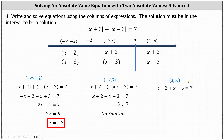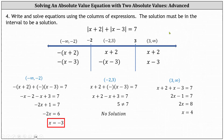For the last equation on the right, combining like terms gives us two x minus one equals seven. Adding one to both sides: two x equals eight. Dividing both sides by two: x equals four. Four is in the open interval from three to infinity, and therefore x equals four is a solution to the original absolute value equation.